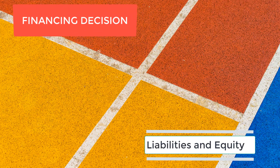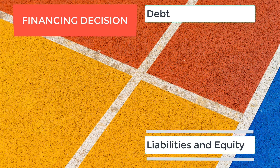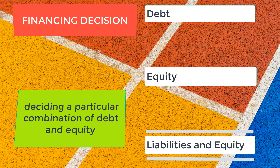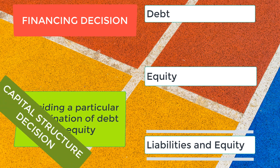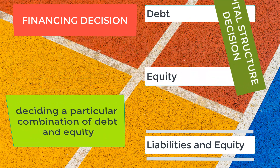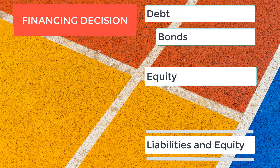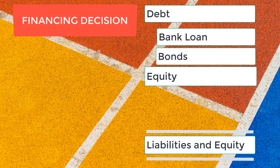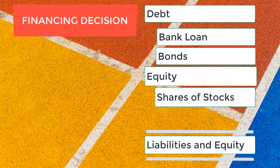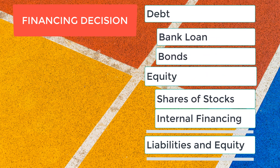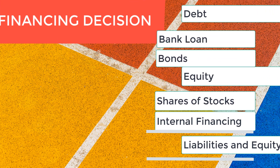Financing can be done through debt financing and equity financing. Deciding a particular combination of debt and equity is what we call capital structure decision. Debt financing is done by acquiring bank loans and by issuance of bond securities. Equity financing can be done by selling shares of stocks and by internal financing, meaning cash flow generated by existing assets.